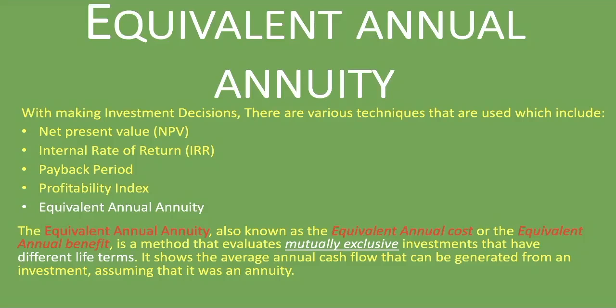The projects have to be mutually exclusive and they have to have different life terms. It shows the average annual cash flow that can be generated from an investment, assuming that it was an annuity — meaning you can reinvest in the same project over and over again. The method shows the project that is most financially efficient.